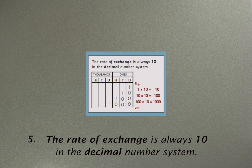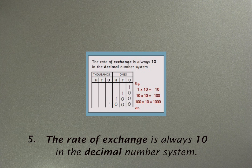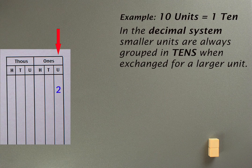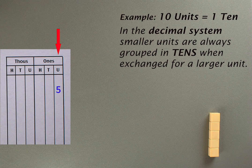And the other thing that children need to understand about place value is the rate of exchange. In our decimal number system, the rate of exchange is always ten. So ten smaller units are always grouped in tens when exchanged for a larger unit.